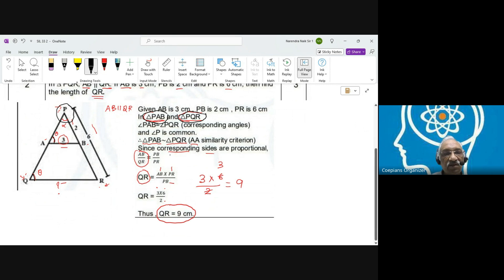Then we used that the corresponding sides have to be proportional. So AB upon QR is equal to PB upon PR. We just substituted the value and we got the answer as QR as 9. Thank you.